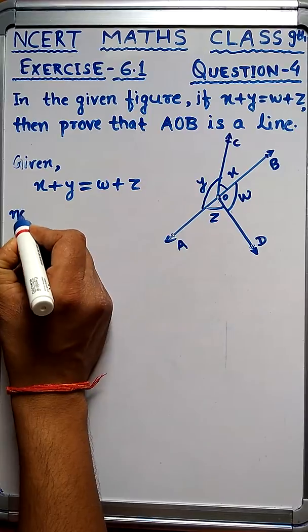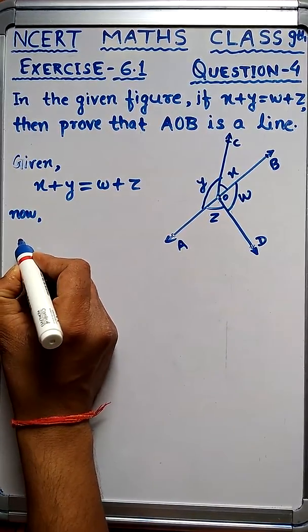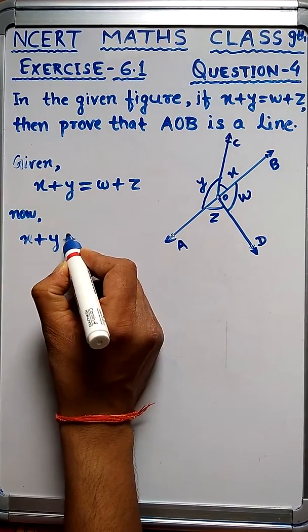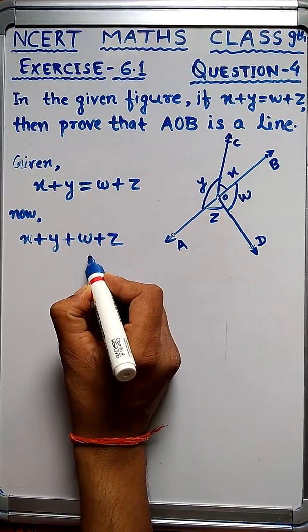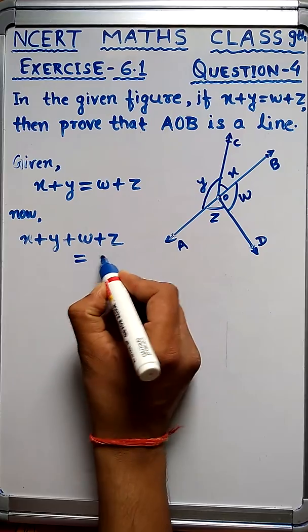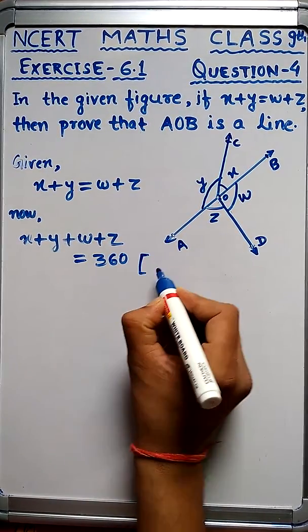Now what do we need to write? We can write: x plus y plus w plus z equals 360 degrees. The sum of all angles is 360 degrees.